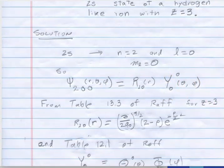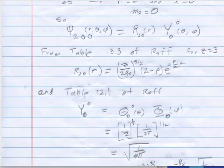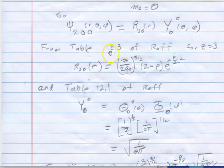And then those you just basically look up, you can look up from table 13.3 of Raff for z equal to 3 in your textbook. It gives this expression. I plugged in z equal to 3, there was a z here, and I plugged in for z equal to 3.